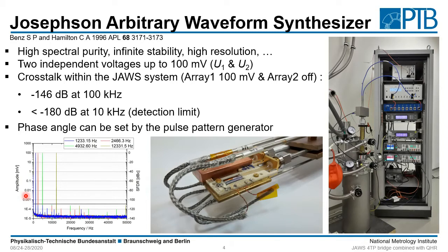The phase change in our system can be arranged by changing the starting position of the second memory with respect to the first memory. This is our pulse pattern generator, which offers two memories, and the signal we generate here is fed via the high frequency line to our Josephson system, which is cooled down by a pulse tube cryocooler.